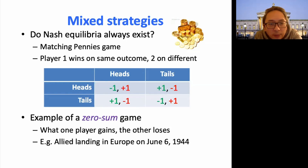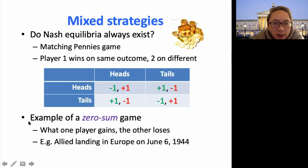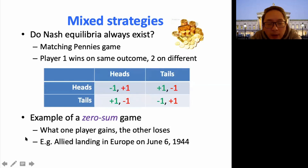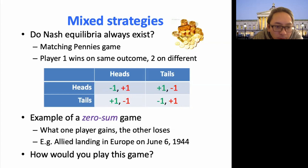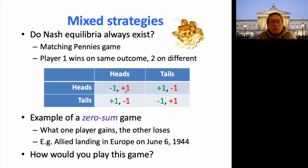Let's look at this example — the Matching Pennies game, the famous Matching Pennies game. This is also a zero-sum game, by the way. Because if you're looking at the rewards, player one and player two added together, it's always zero. So it's a case where when you win, the other one is going to lose.